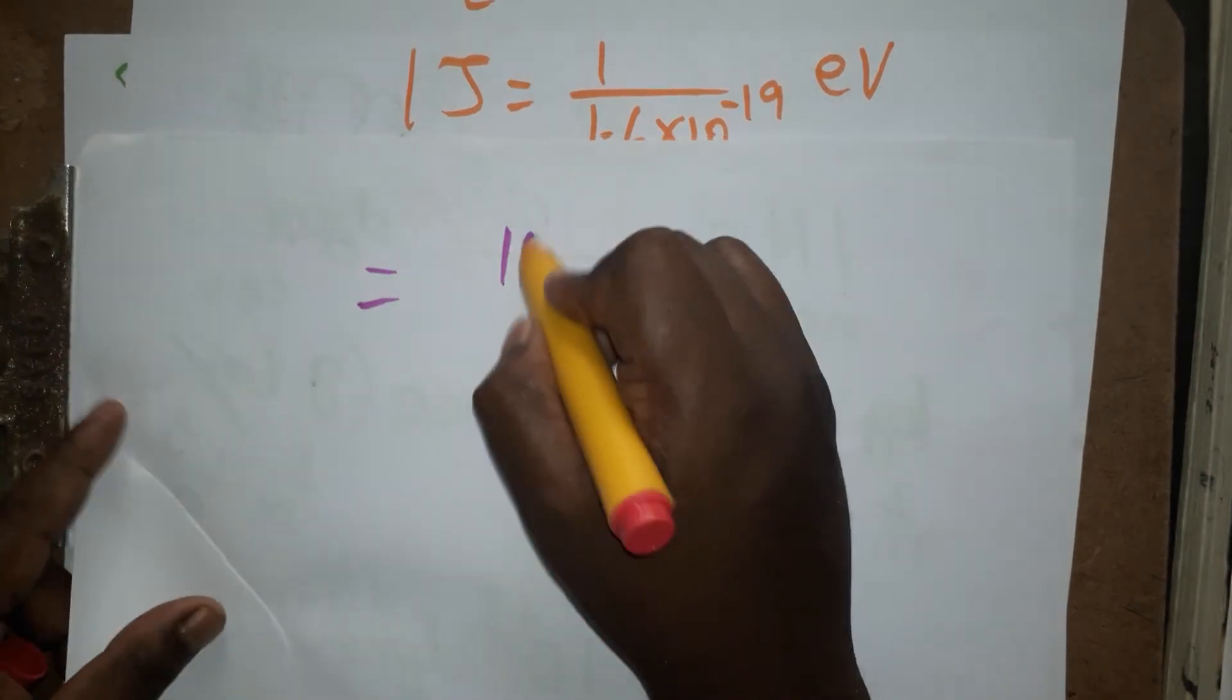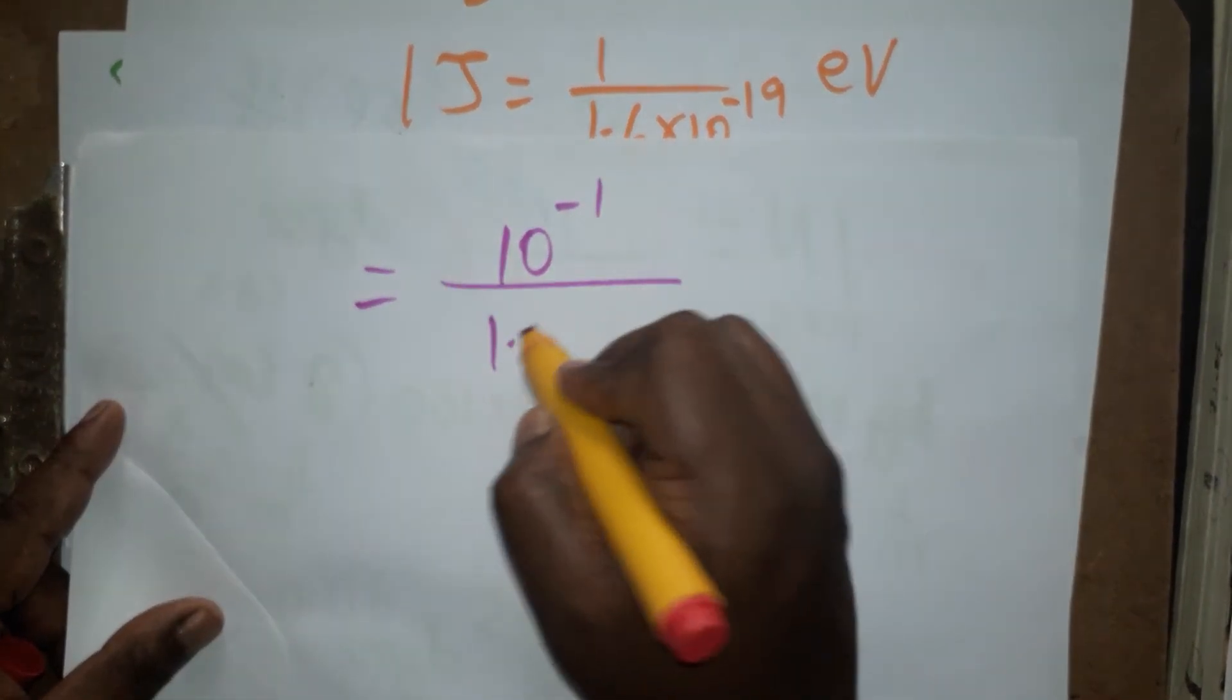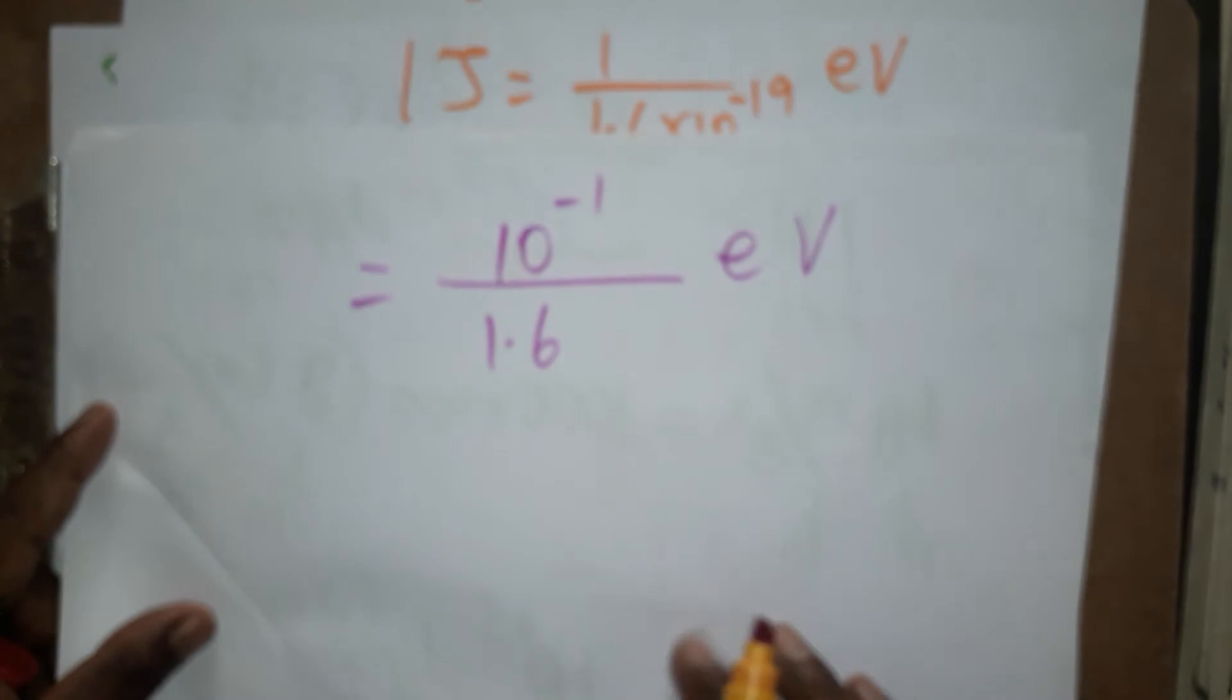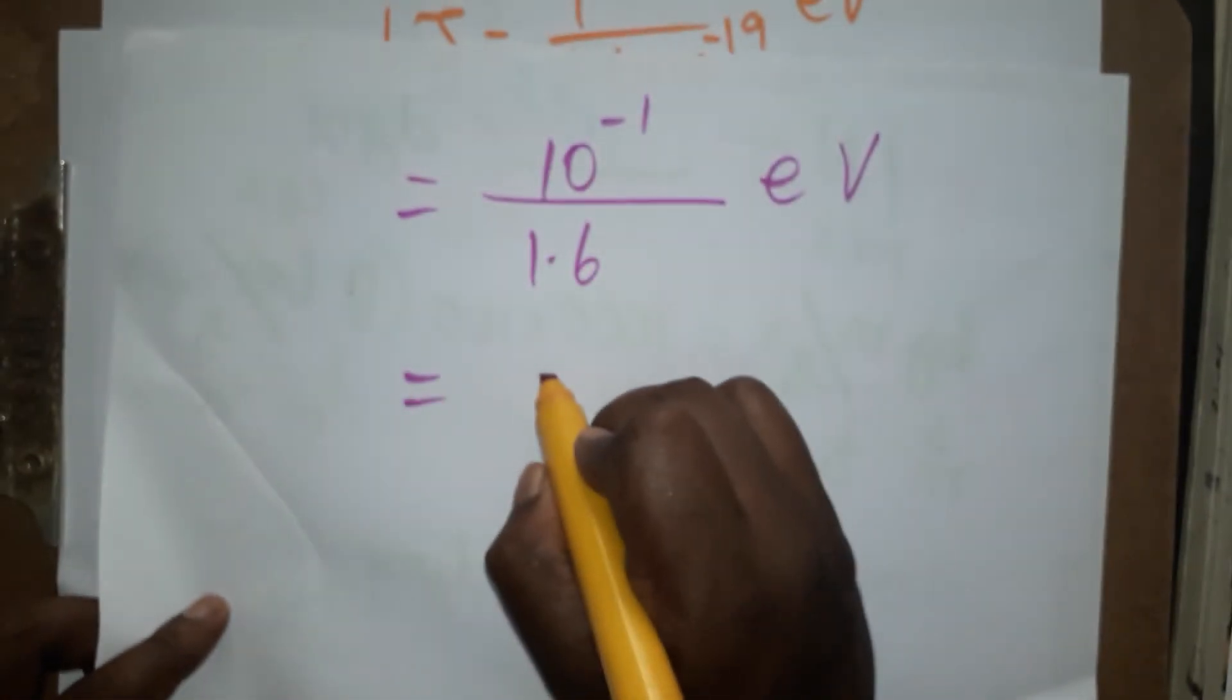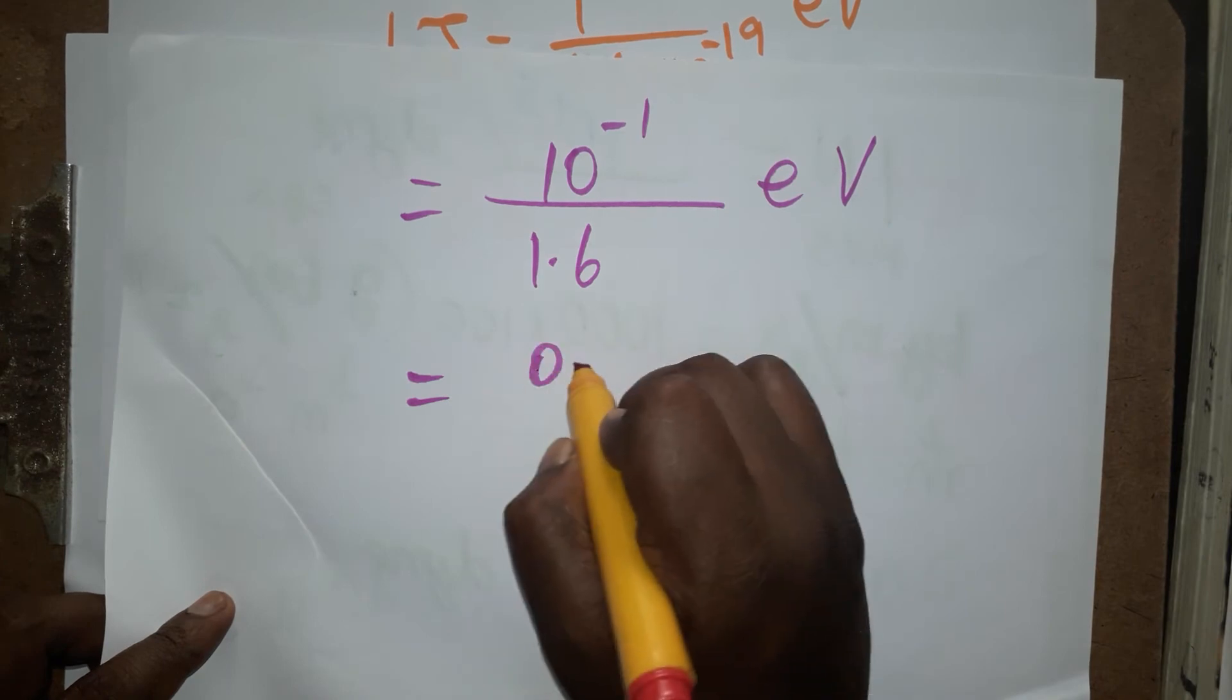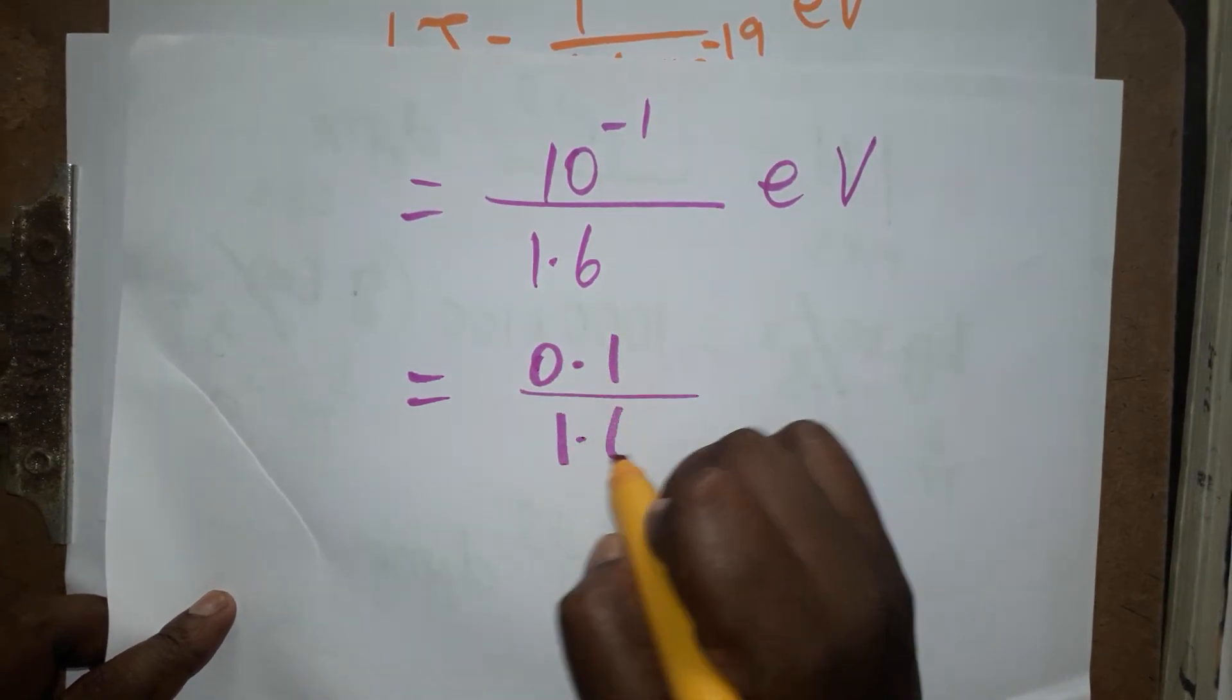This calculation: 10^-1 we can write as 0.1 divided by 1.6 eV. If you want to remove the decimal, multiply numerator and denominator by 10, so 1 divided by 16 eV.